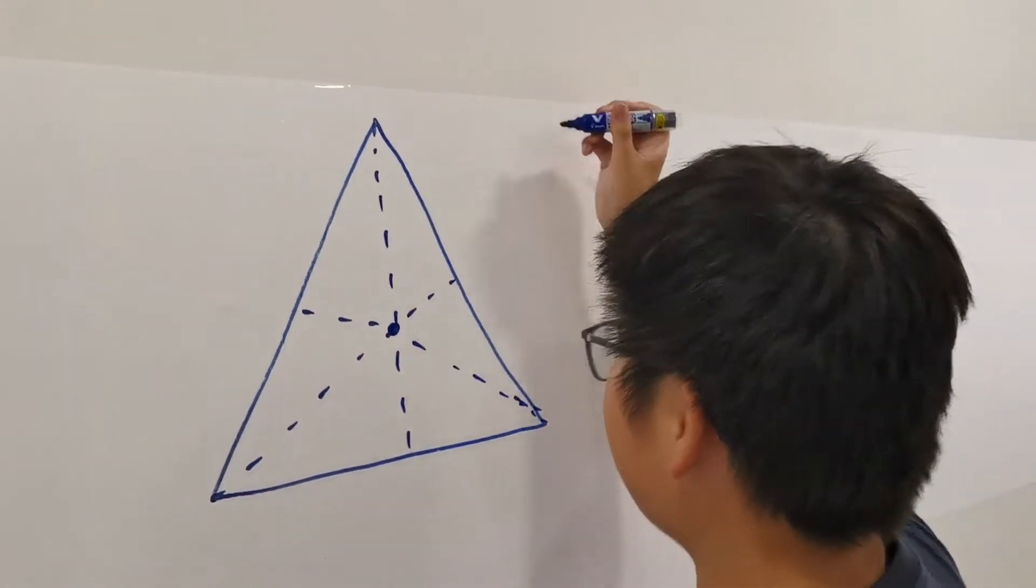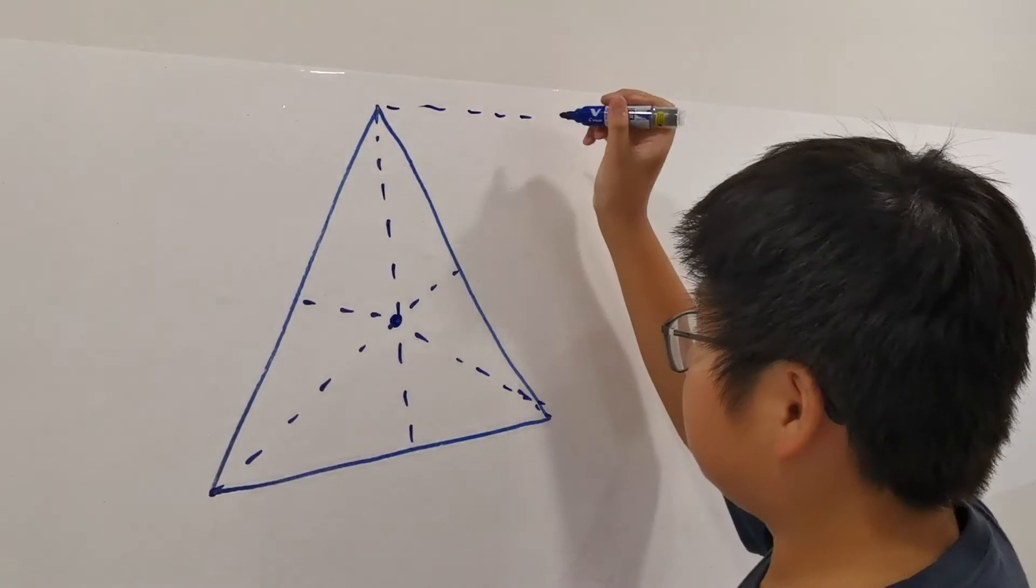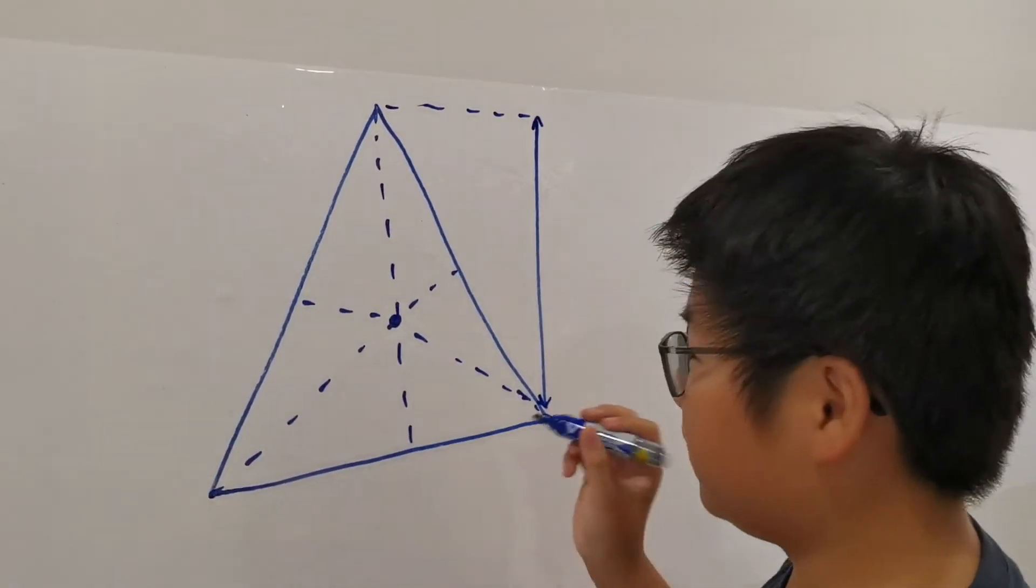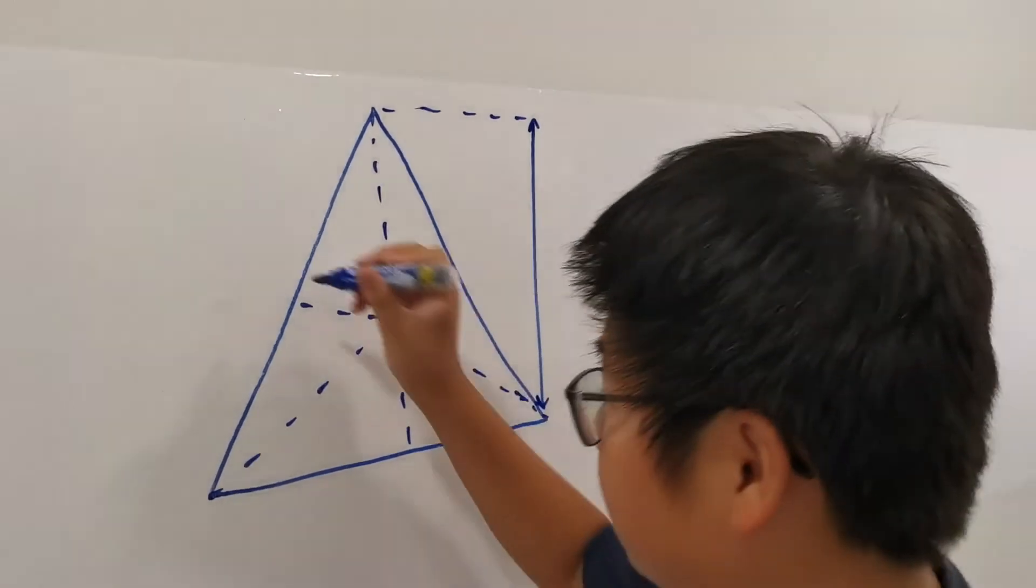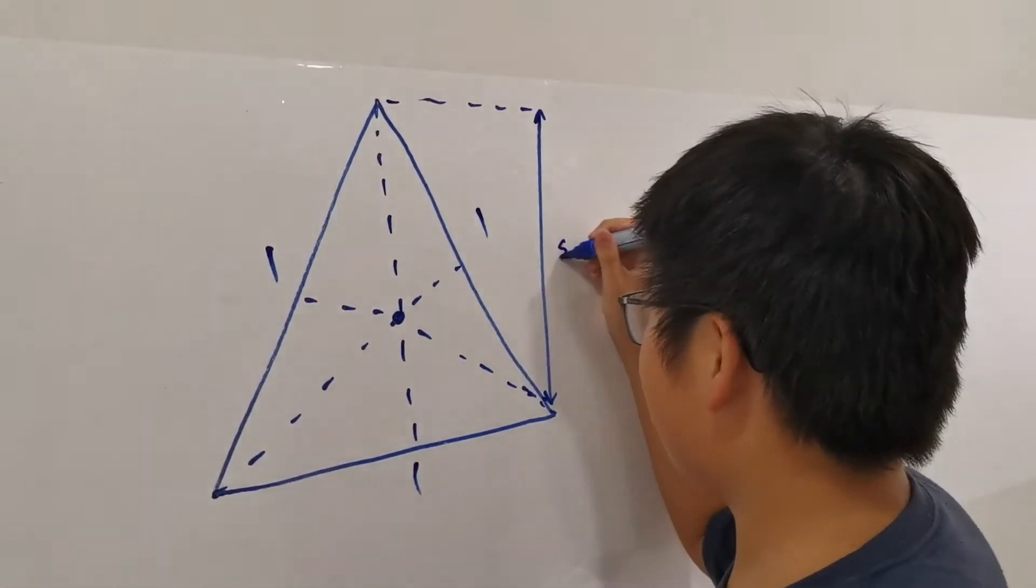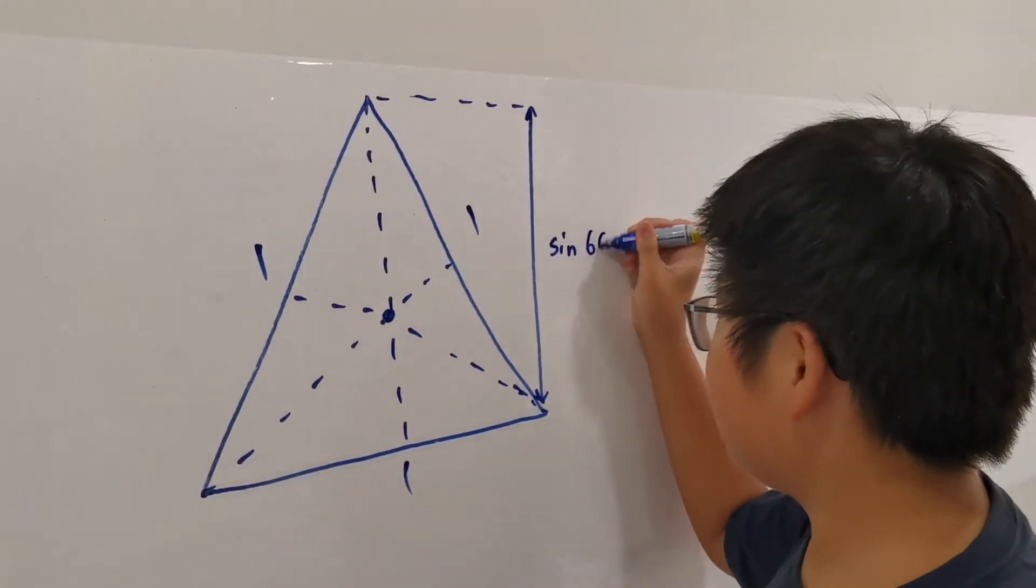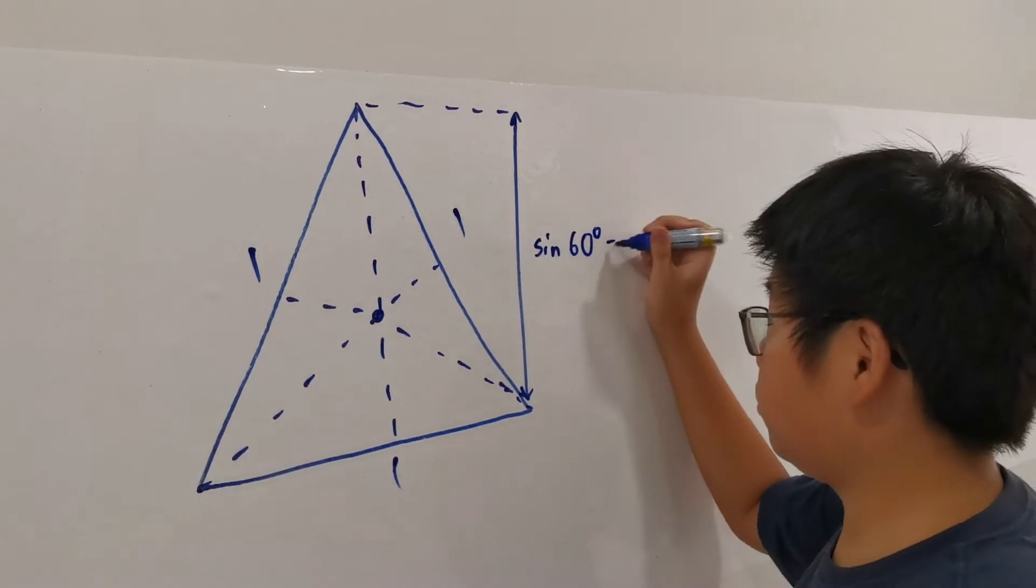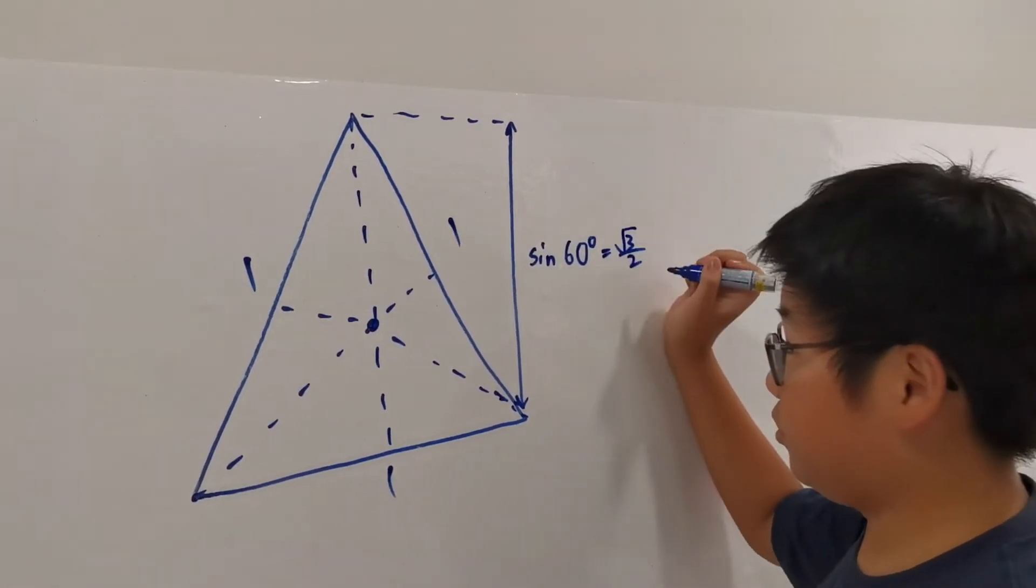Now this has height. Sine. You know, SOHCAHTOA. This is 1, this is 1, and this is also 1. Sine 60 degrees, because there are 60 degrees by definition of an equilateral triangle, equals to the square root of 3 over 2.